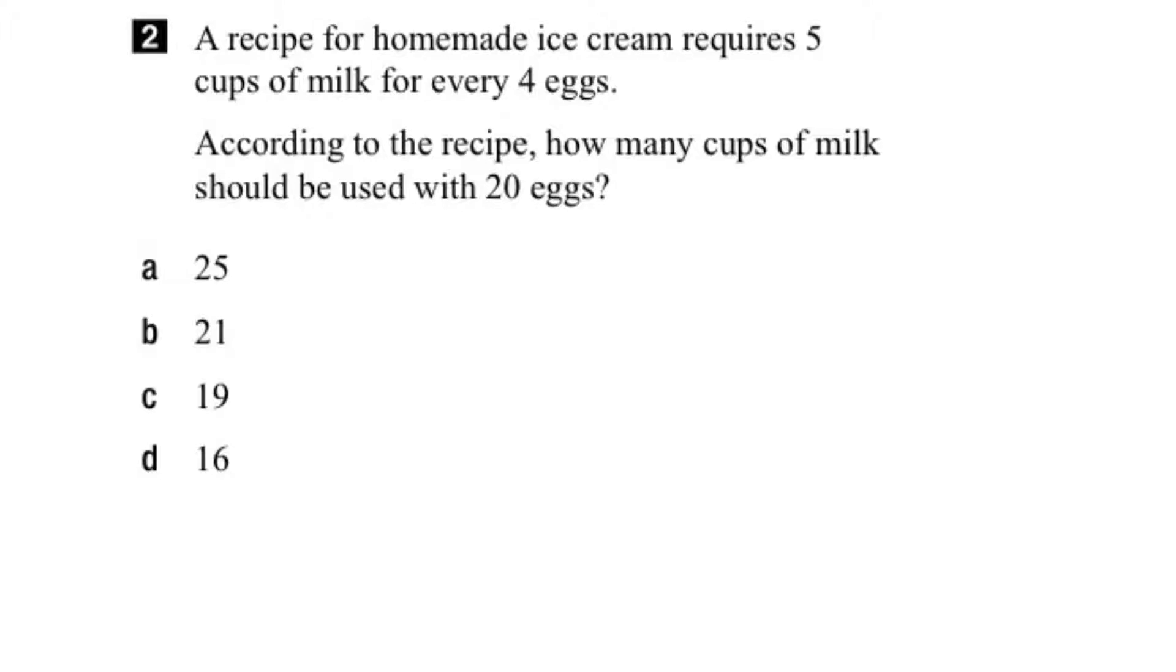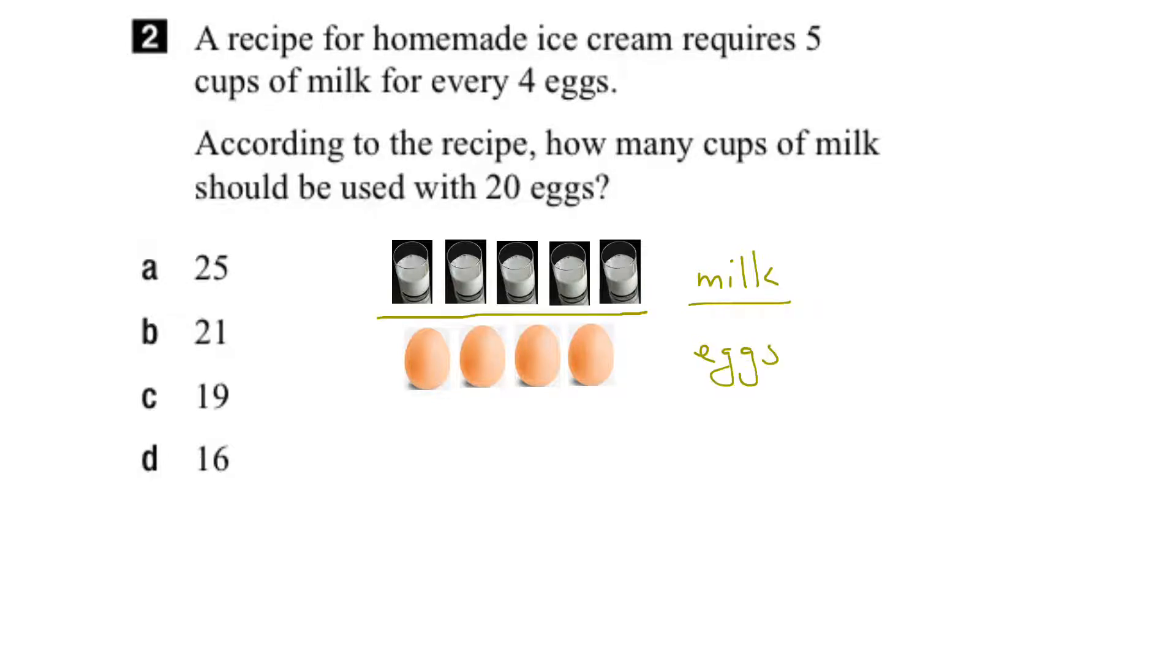Okay, let's get a visual here. So we need five cups of milk, and then for every four eggs. So this becomes our ratio of milk to eggs, which is five cups of milk for every four eggs. So milk in the top, eggs in the bottom.